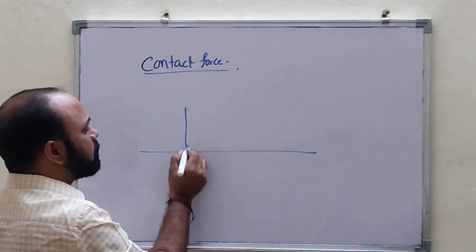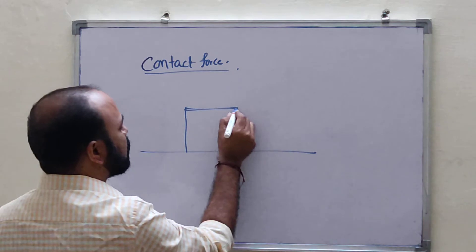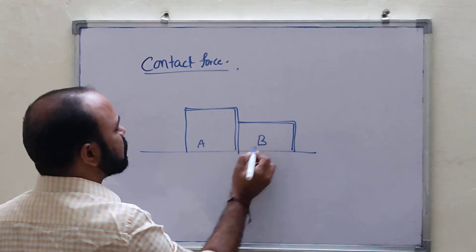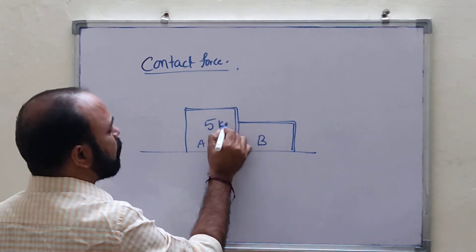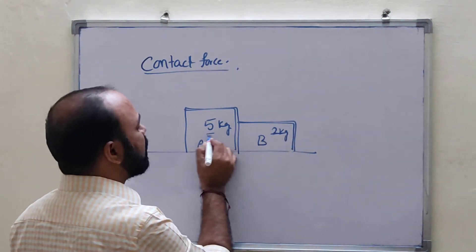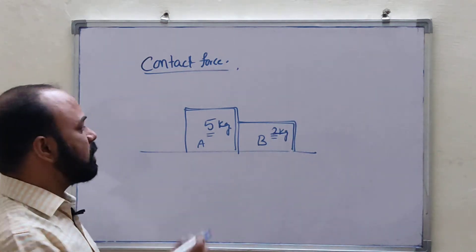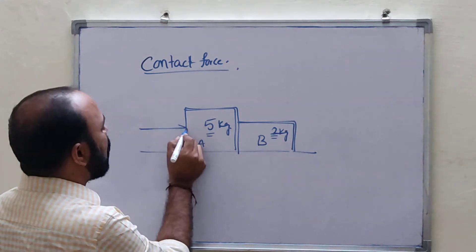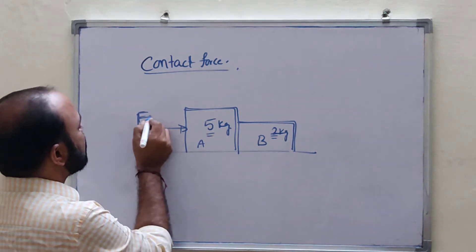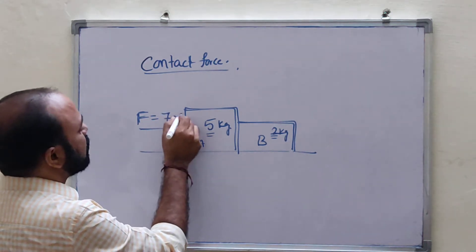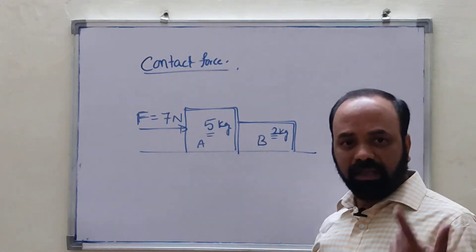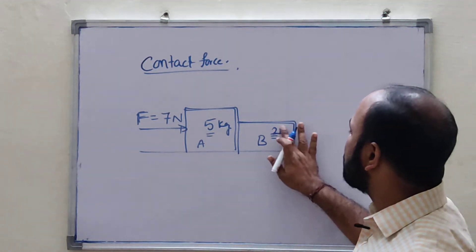I have two blocks: this is block A and this is block B. Block A is 5 kg and block B is 2 kg. Now I am applying a force on the 5 kg block — the applied force F is equal to 7 Newton. One block mass is 5 kg and the second block is 2 kg.